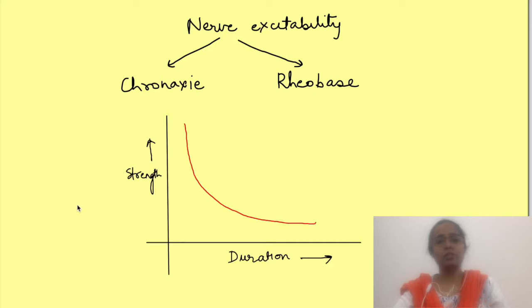Hello and welcome to Physiology Open. The excitability of nerve is studied using two properties, chronaxie and rheobase, which are determined by plotting strength duration curve.